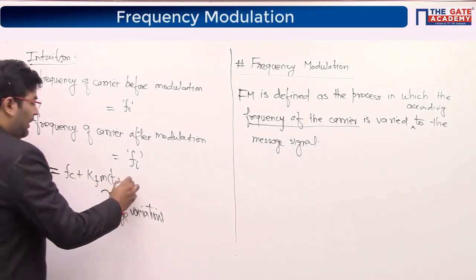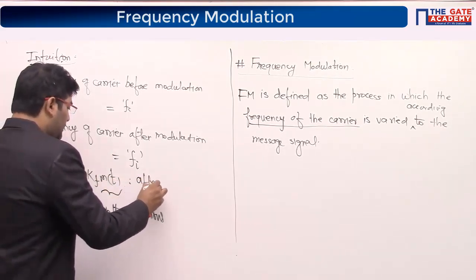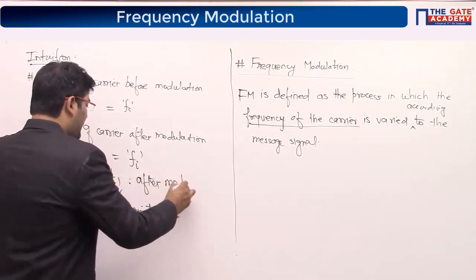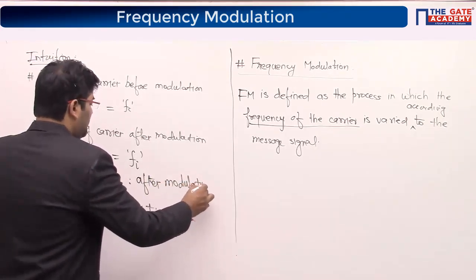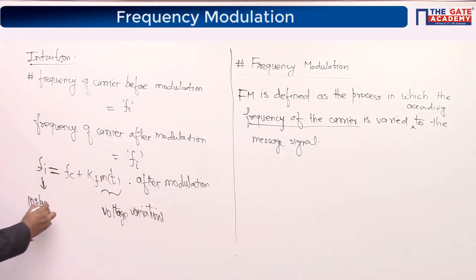Kf indicates the change in carrier frequency per 1 volt of the message signal. The unit of Fi is Hz, the unit of fc is Hz, and m(t) is in volts, so Kf must have units of Hz per volt so that volts cancel out.